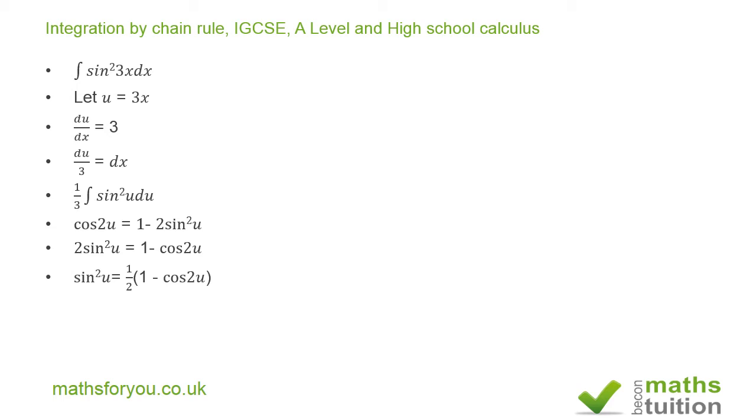So we can go ahead now and integrate a half, the half comes from there and the third comes from du over 3. So we now need to integrate 1 minus cos 2u.